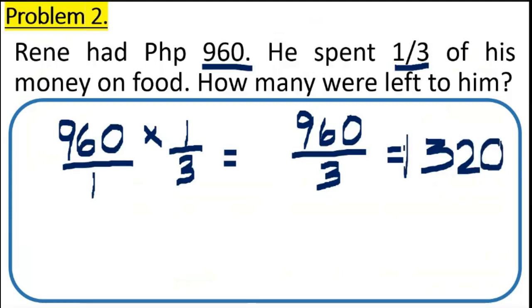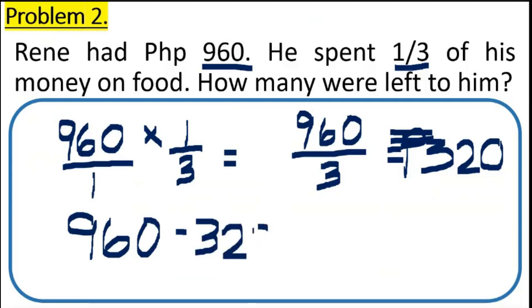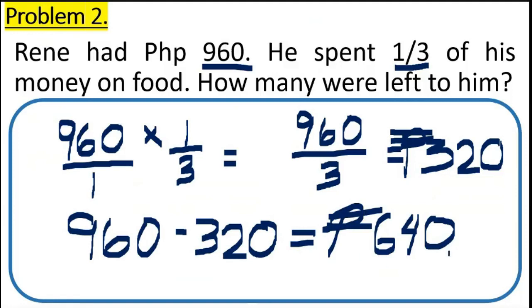If we're going to divide this one, we will have an answer of 320. Let's put the unit of peso. And so, Rene spent 320 pesos on food. The question is, how many were left to him? We need to subtract the total money of Rene to the money spent on food. So, 960 minus 320 is 640. Therefore, we have 640 pesos. So, the money left to Rene.